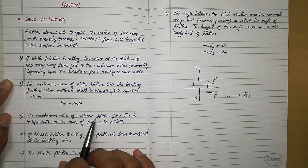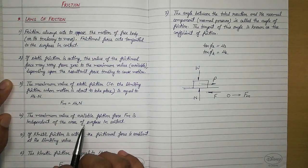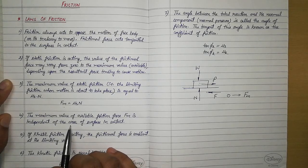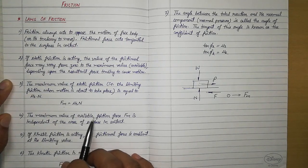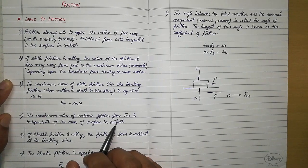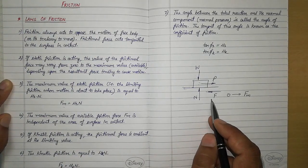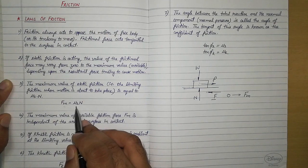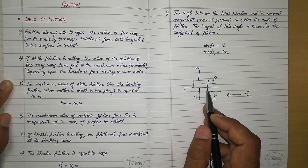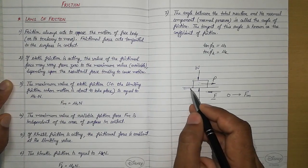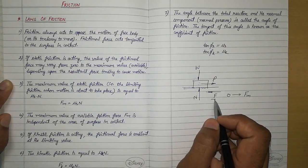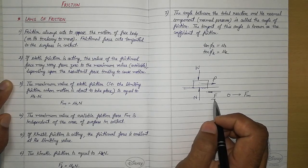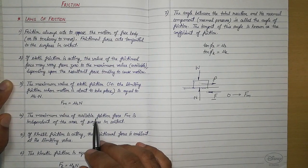The maximum value of available friction force fm is independent of the area of surfaces in contact. Students often get confused thinking that a larger area means a larger frictional force — that is not correct. Friction always depends upon the coefficient of friction, or the peaks and irregularities between the contacting surfaces, but it does not depend upon the area in contact.